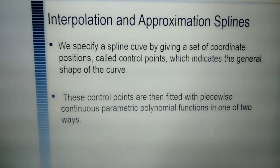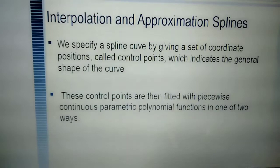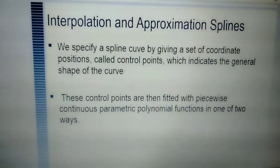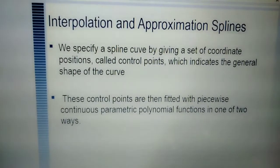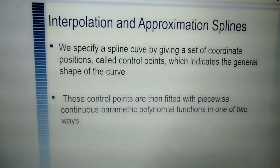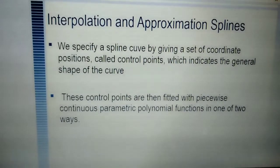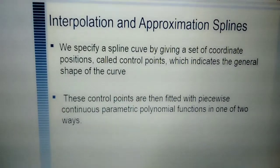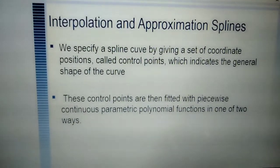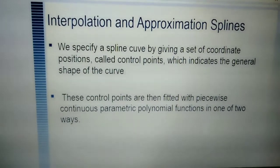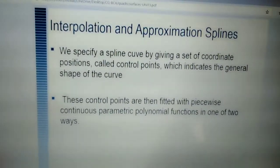In diagram form I will be telling you the difference. We specify a spline curve by giving a set of coordinate positions called control points, which indicates the general shape of the curve. These control points are then fitted with piecewise continuous parametric polynomial functions in one of two ways.